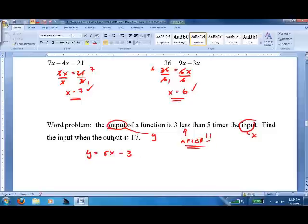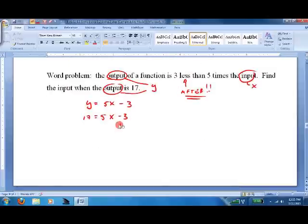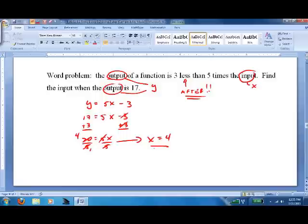Now it says, find the input when the output is 17. And again, output is the y value. So 17 equals 5x minus 3 plus 3 plus 3. 20 equals 5x. Divide by 5. Divide by 5. Cancel. Cancel. 4. X equals 4. Write it a little more clearly here. X equals 4. And, hoping we wrote our equation right, 5 times 4 is 20, minus 3 is 17. Checks.